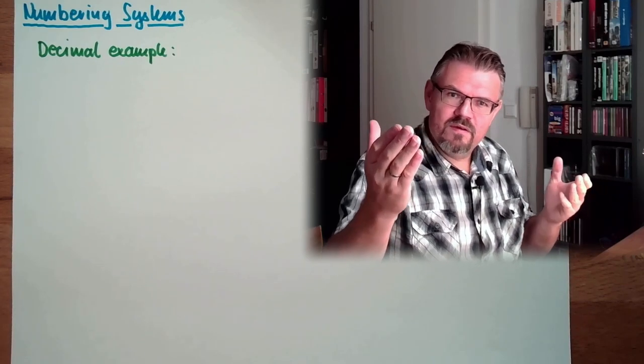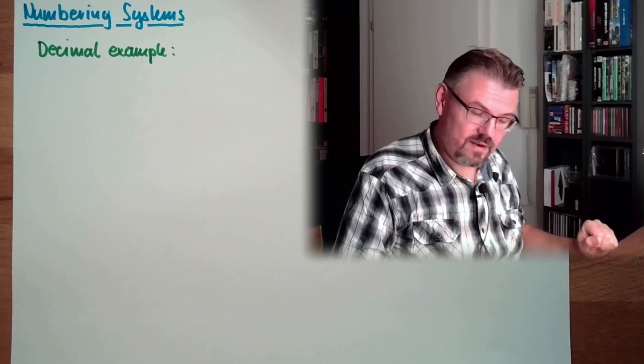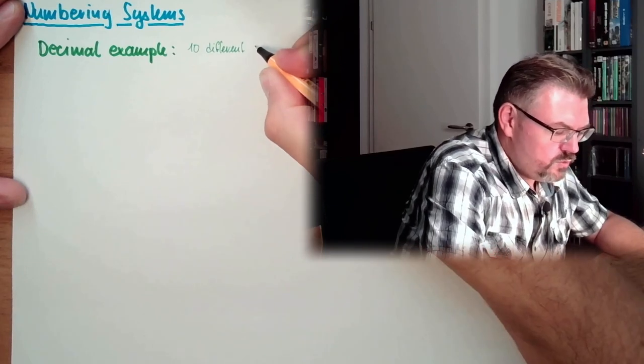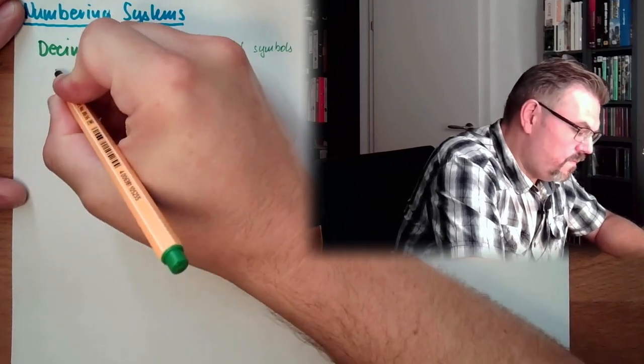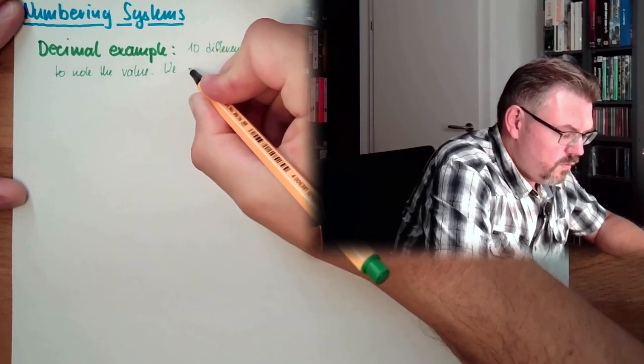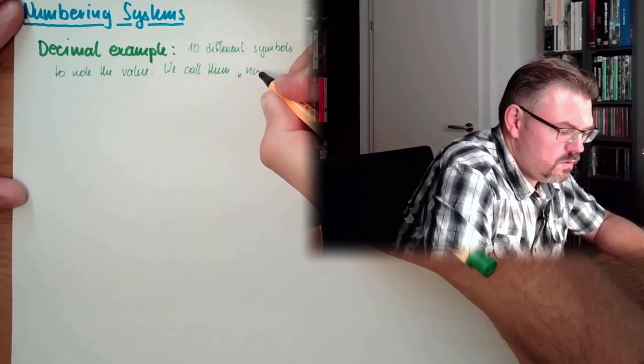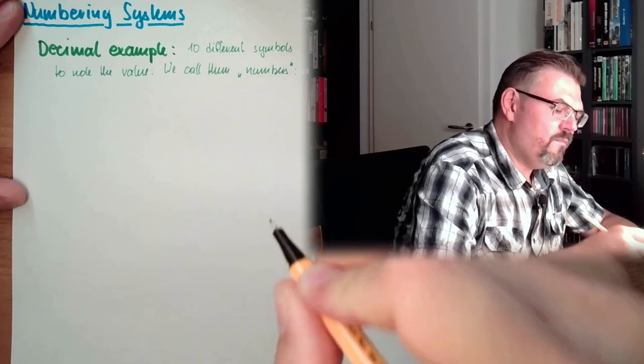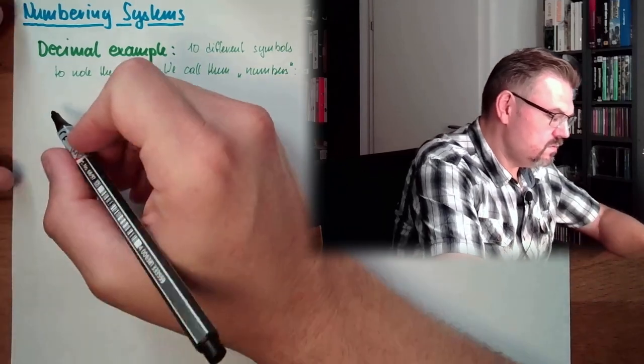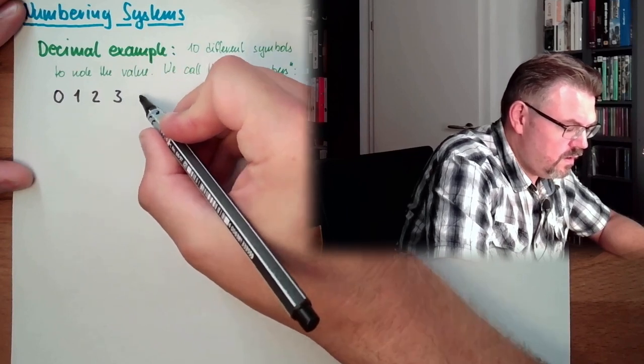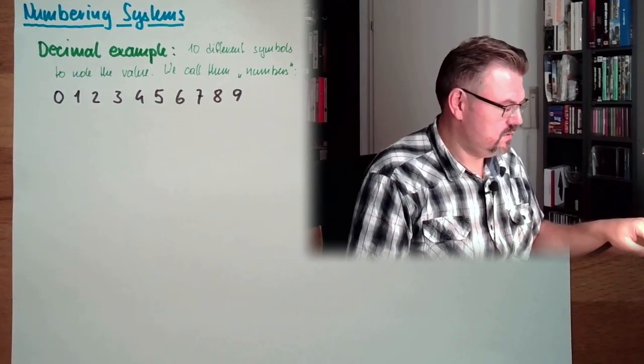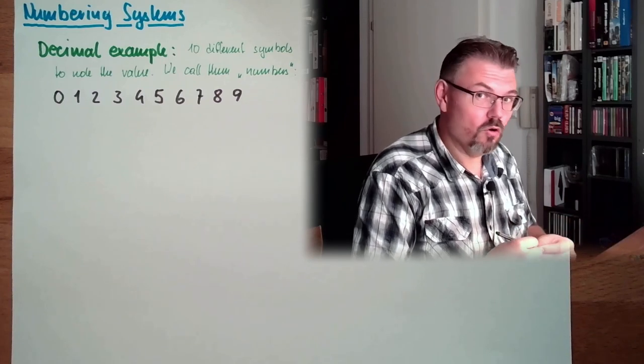And how many different symbols we have? Decimal, 10. We have 10 different symbols to note the value. We call them numbers. Those symbols are pretty sure you know. We have the symbols 0, 1, 2, 3, 4, 5, 6, 7, 8, 9. These are our 10 symbols. These are also called numbers.